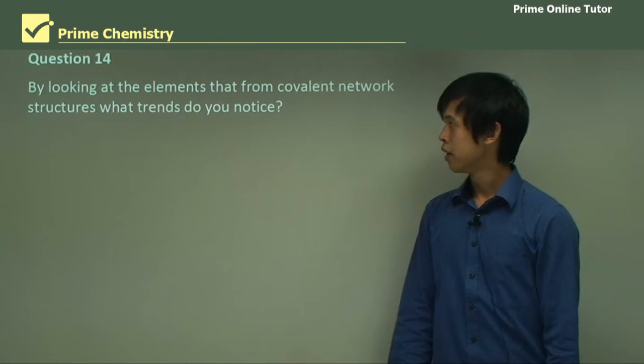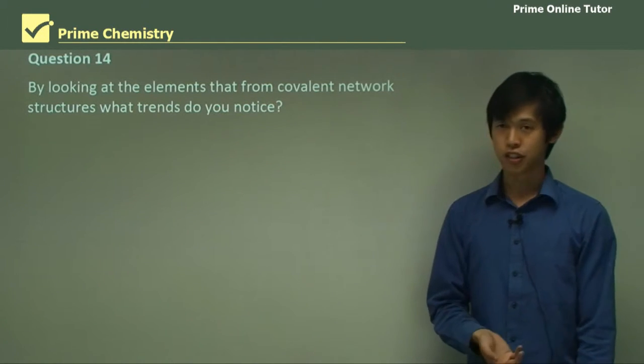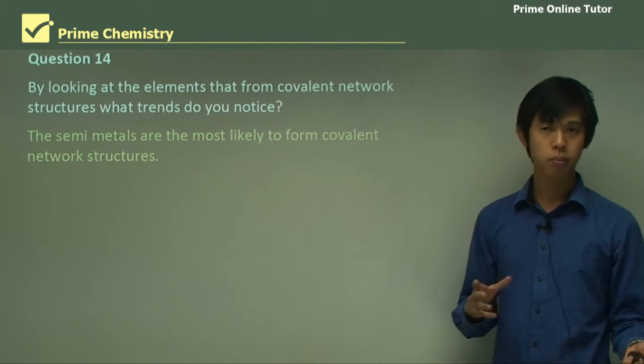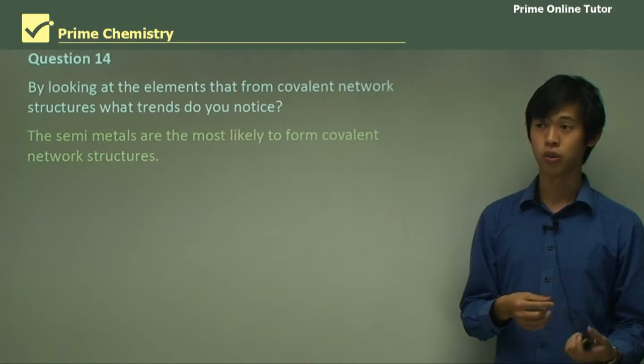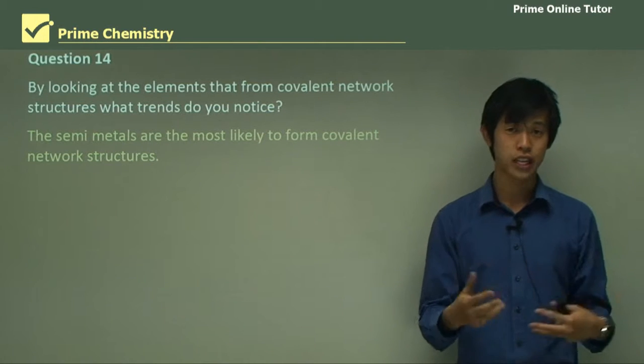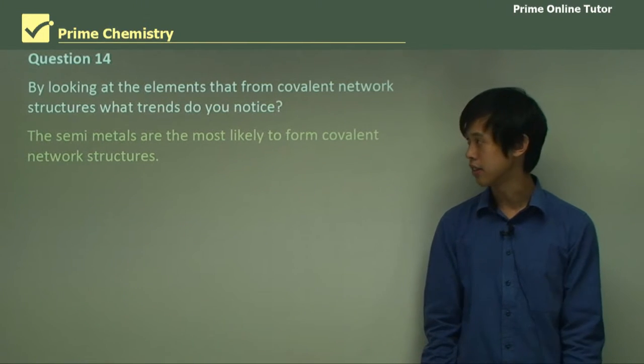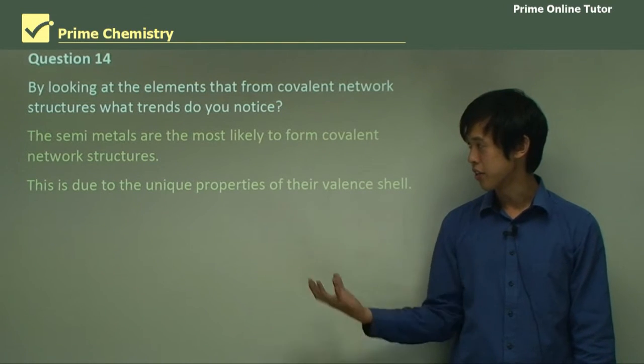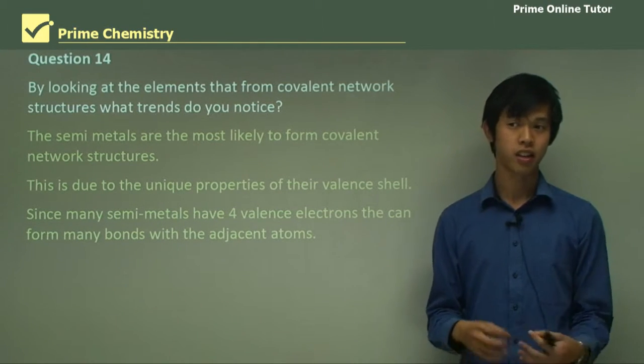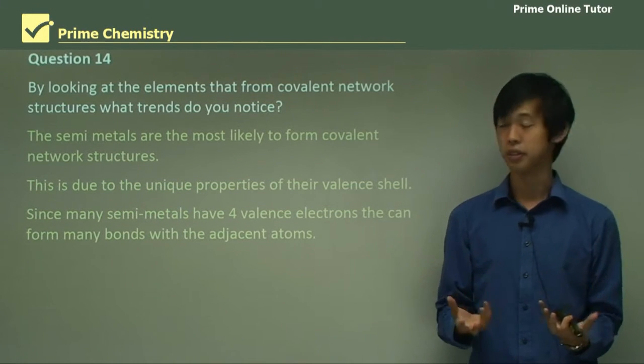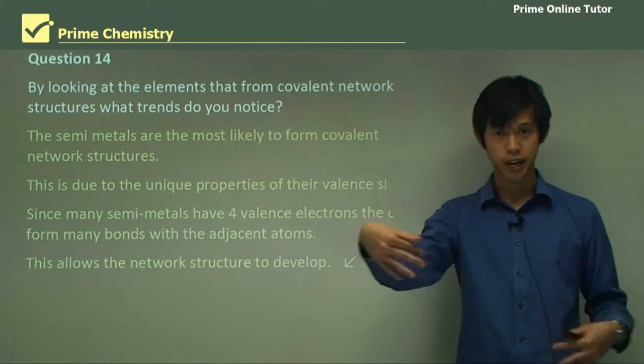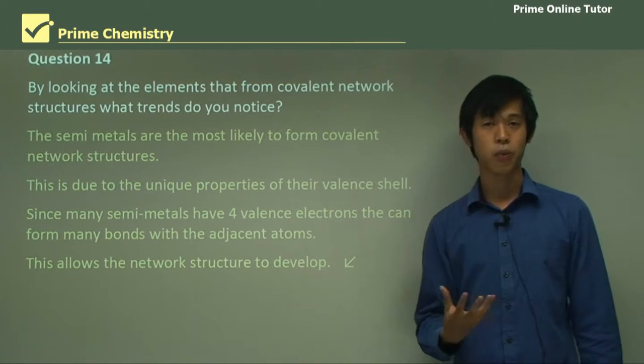Question 14. By looking at the elements that form covalent network structures, what trends do you notice? Well, the semi-metals are the most likely to form covalent network structures. And it's probably because they have the most number of bonds, usually four, which means that they can form large networks because they can make bonds with adjacent four atoms. So that's why they tend to form these network structures. This is due to the unique properties of their valence shell. Since many semi-metals have four valence electrons, they can form many bonds with adjacent atoms rather than forming a small number of bonds with one atom making a molecule. So because they can make bonds with lots of adjacent atoms, they can allow the network structure to develop.